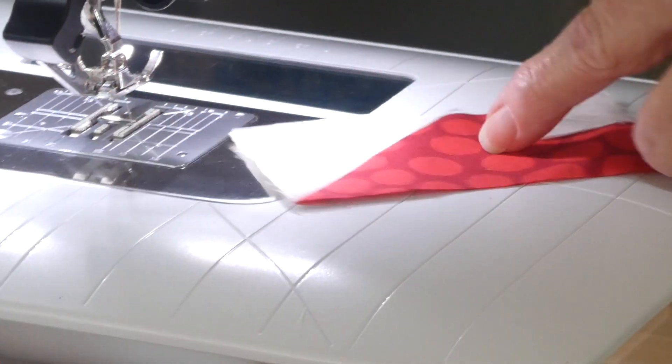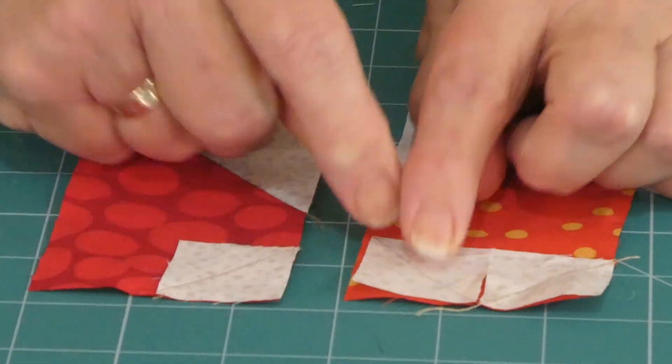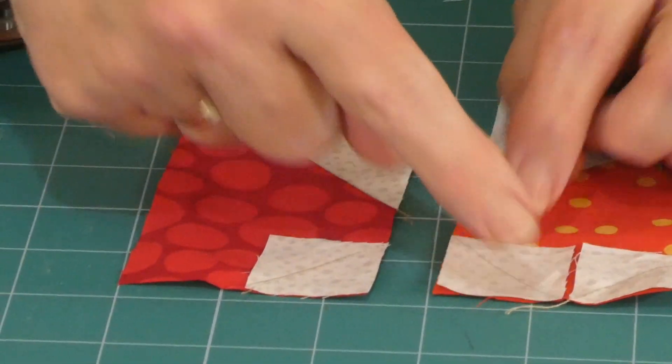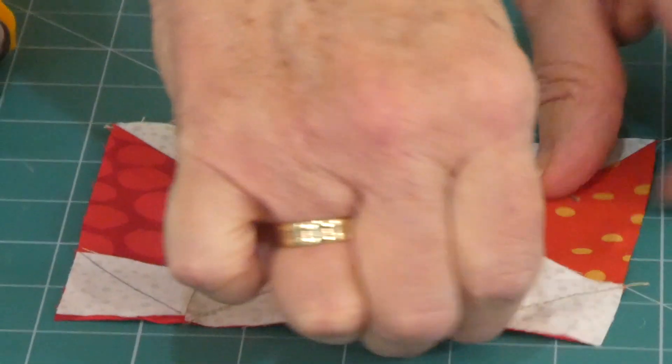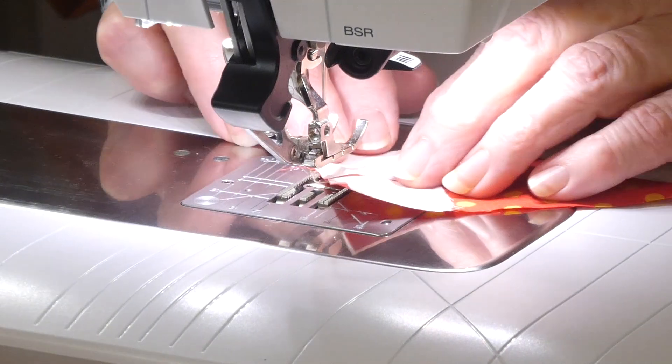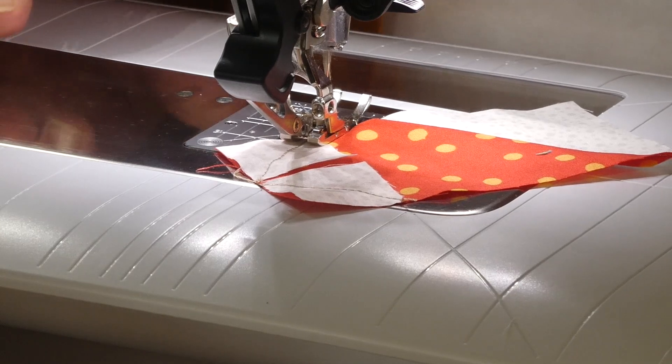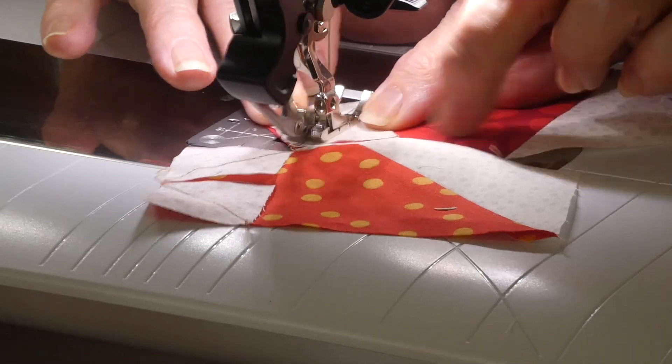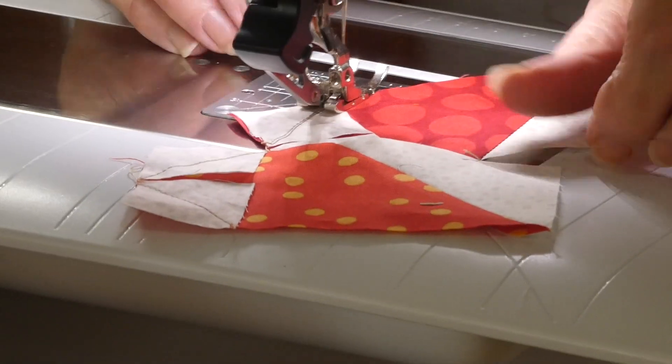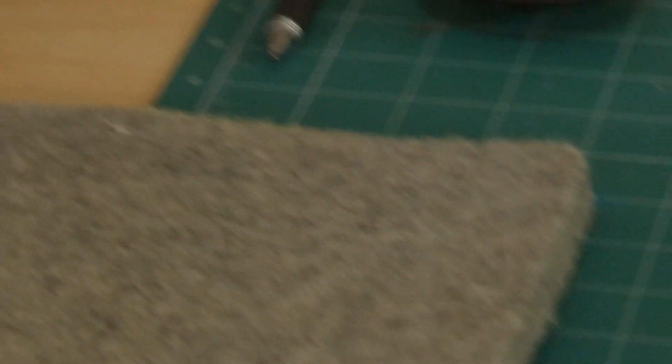But in actual fact, those points will disappear a little bit when we put them in something, because that seam allowance will disappear. So we've got the two corners on. Now we want to do the other one. That looks like it's more or less meeting in the top there as it should.